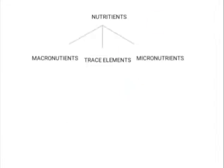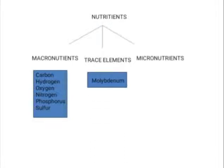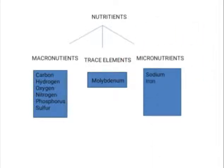We have nutrients, and in nutrients we have macronutrients, trace elements, and micronutrients. In case of macronutrients you have carbon, hydrogen, oxygen, nitrogen, phosphorus, and sulfur. In case of trace elements you have molybdenum, and in case of micronutrients you have sodium, iron, calcium, magnesium, and zinc.